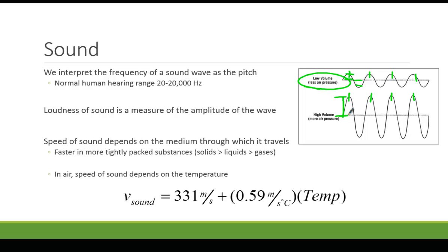The speed of sound in air is defined by this equation. At zero degrees Celsius, the speed of sound is 331 meters per second. And in every degree warmer, it increases by 0.59 meters per second.